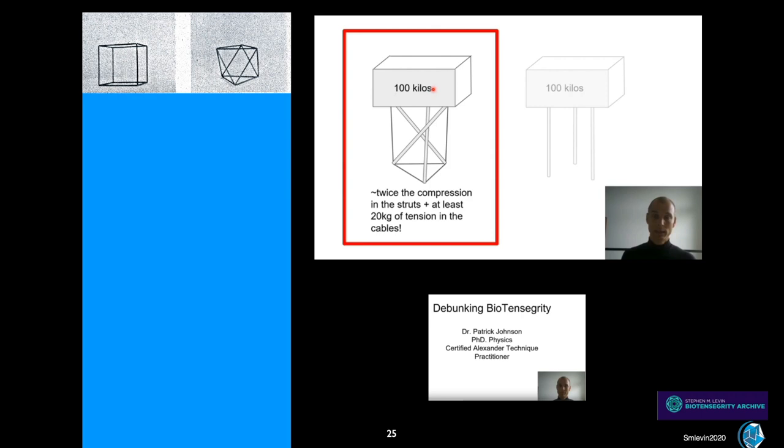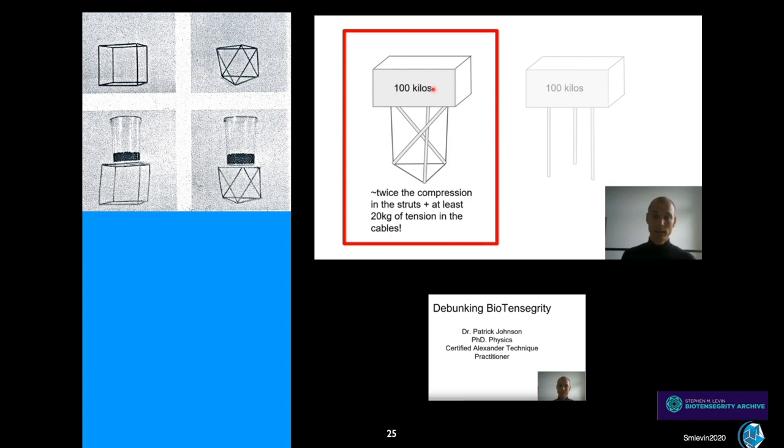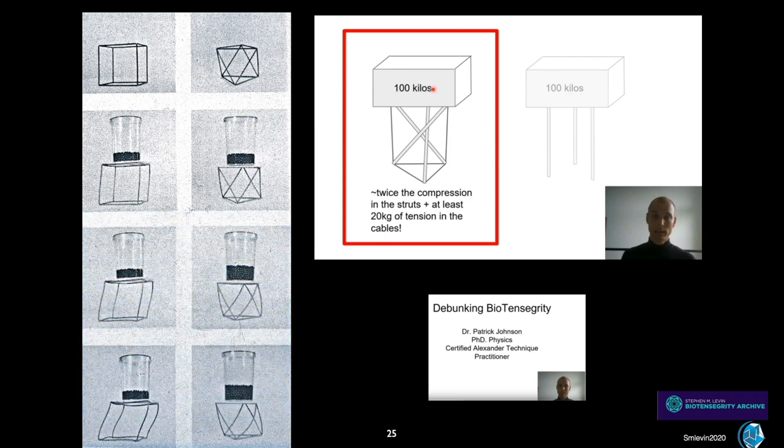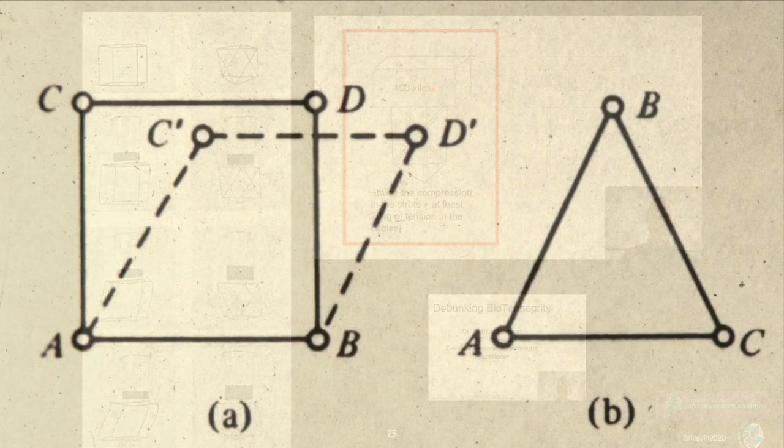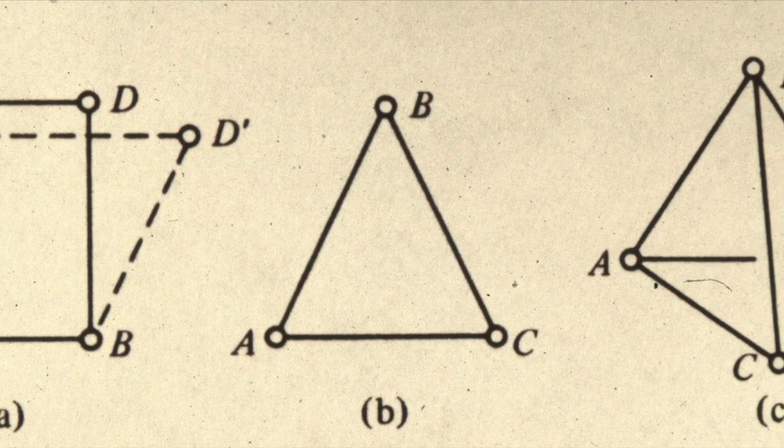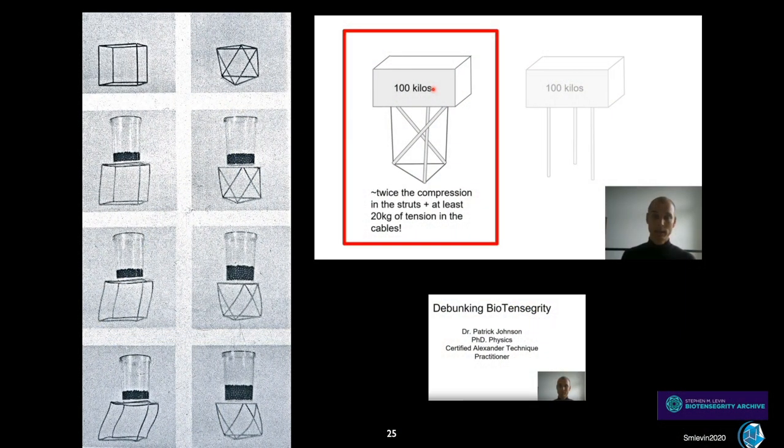Rather than just doing the calculations, let's put this to the experimental test. I have here two frame structures comparable to the model that Dr. Johnson shows. I'll load them with beakers and add buckshot and watch and see how the frames distort. As you can see, it takes twice amount of buckshot to distort the triangulated frame structure than it does the square frame structure. Dr. Johnson fails to recognize the emerging properties of triangles and instead deconstructs the triangle and measures each structure separately. There are a few more errors in Dr. Johnson's presentation, but I think you get the point. Dr. Johnson does say some very nice things about biotensegrity. He just gets his physics wrong.